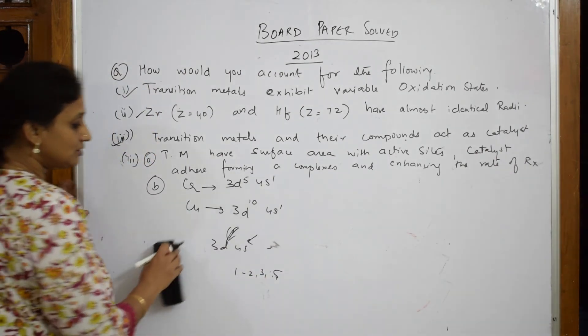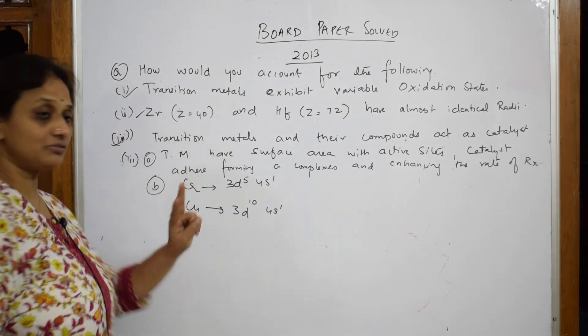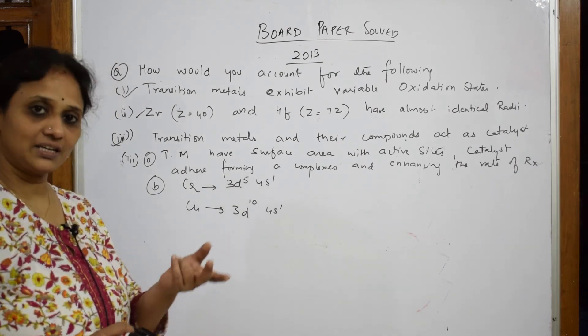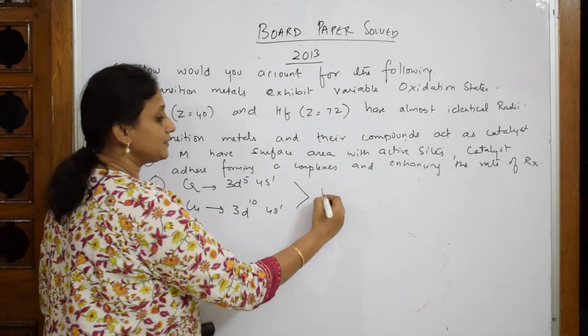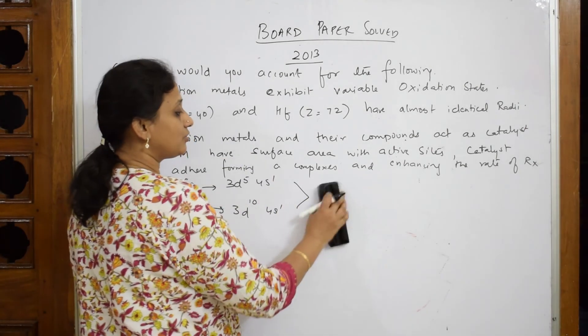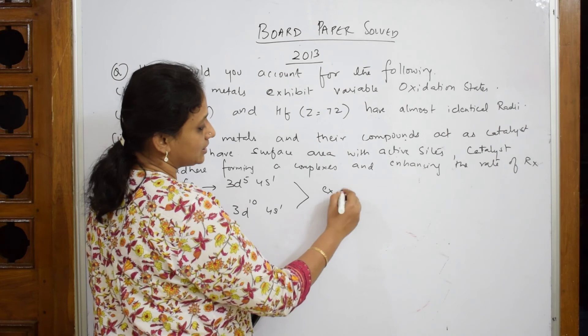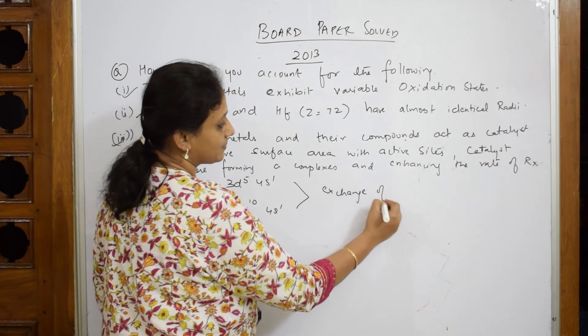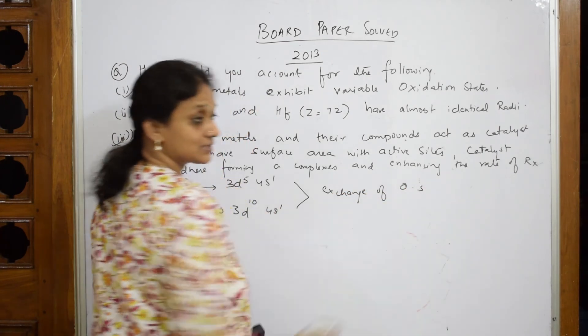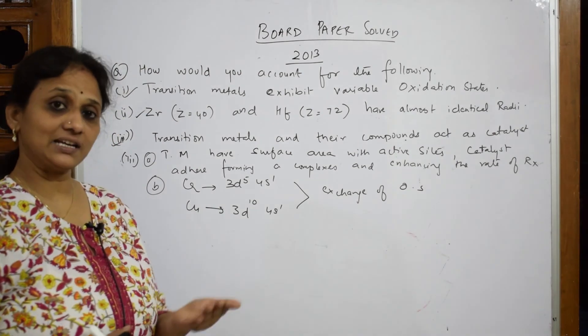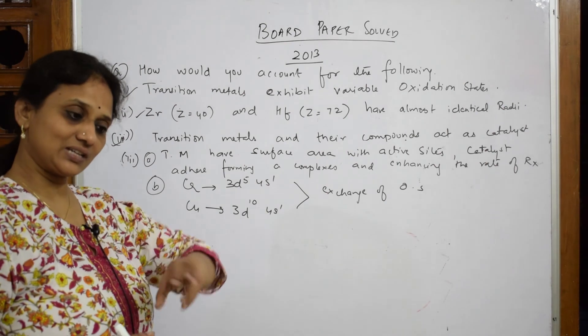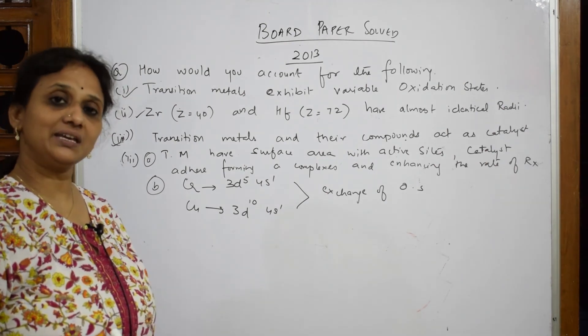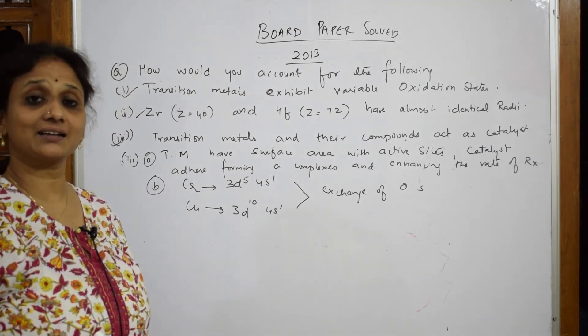So here there is a variation in configuration. Yes. So those electrons are there isn't it? Right. So here you are observing exchange of oxidation states. Exchange of oxidation states. Now what is available now? Where electrons, lot of electrons present. That electron, not excess, but there is presence of electrons, making the transition metals act as catalyst.